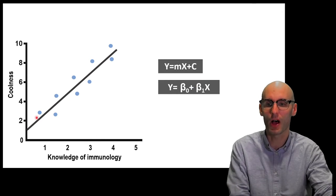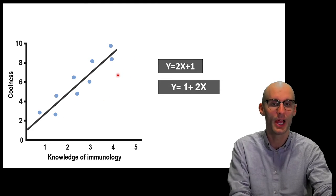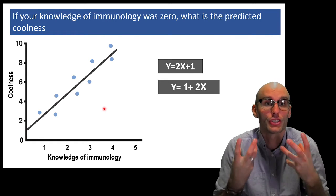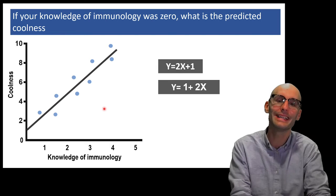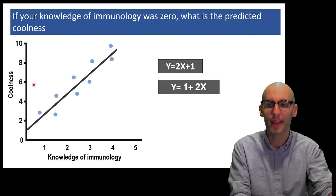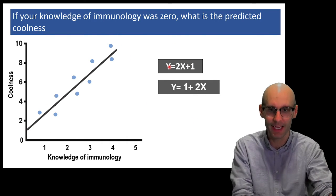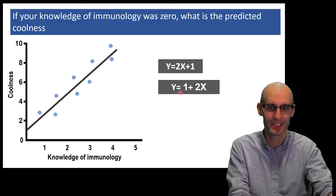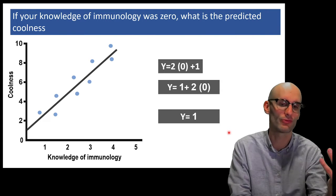So these formulas describe this line modeling the knowledge of immunology against coolness. And you can see that there's a strong positive relationship there. This is real data, I promise you. So if your knowledge, let's try to make a prediction. Let's use the statistical model to make a prediction about future samples. If your knowledge of immunology was 0, what is the predicted coolness? So you plug that 0 into this formula over here.